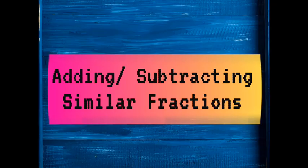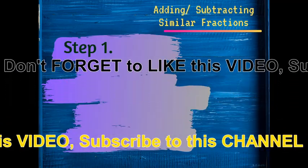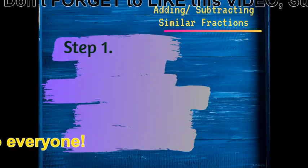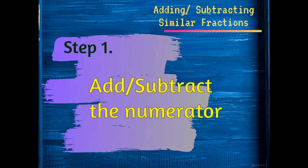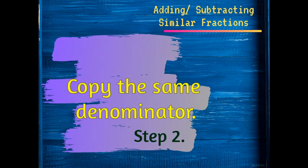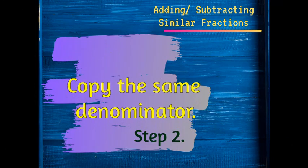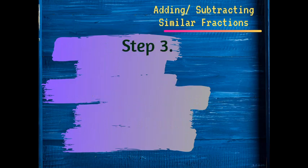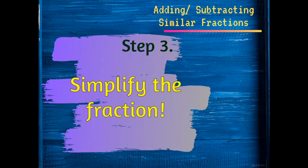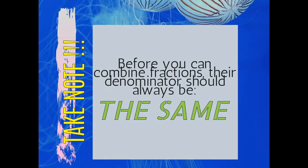Let us recall a little about addition and subtraction of similar fractions. First step is to add or subtract the numerator. Second step is to copy the same denominator. Third step is to simplify the fraction. You should always simplify your final answer no matter what operation you are doing.